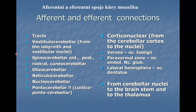Pontocerebellar fibers form a large bundle containing 17 billion fibers, terminating in the posterior lobe as mossy fibers. The majority of afferent fibers are mossy fibers, with one exception — the olivocerebellar fibers, which terminate as climbing fibers. Regarding efferent connections, fibers leaving the cerebellar cortex are axons of Purkinje cells — the only efferent element of the cerebellar cortex. All other cells are interneurons.